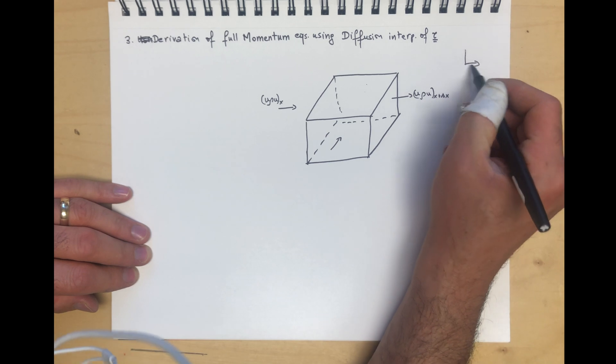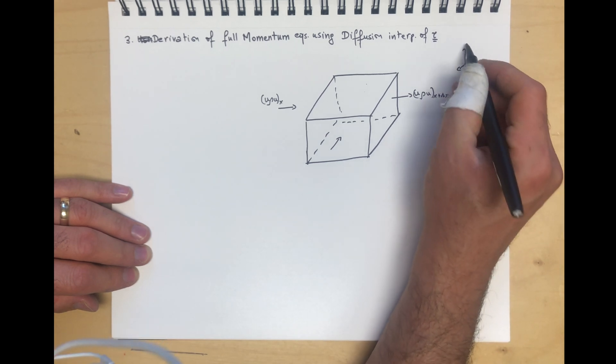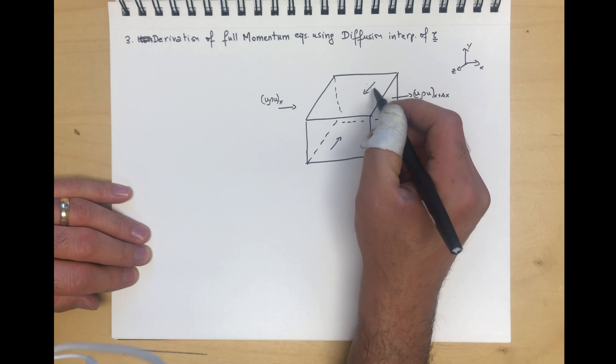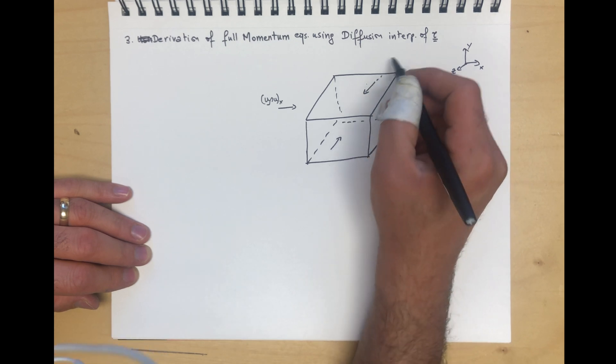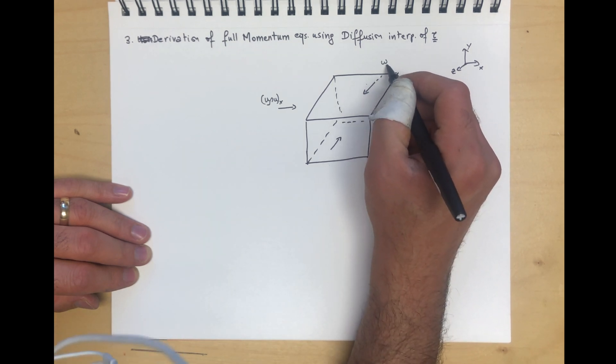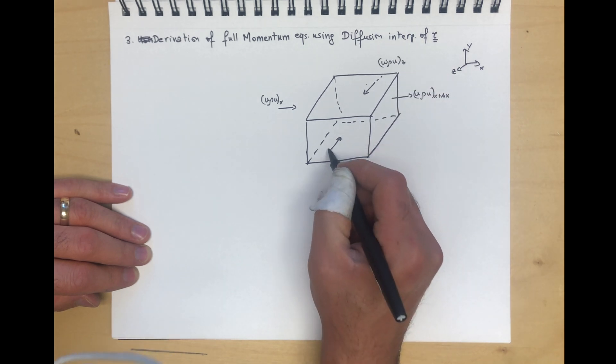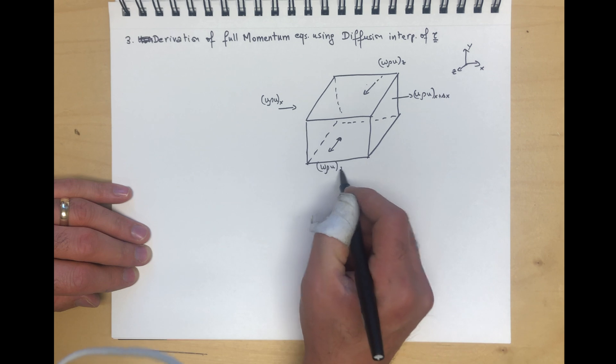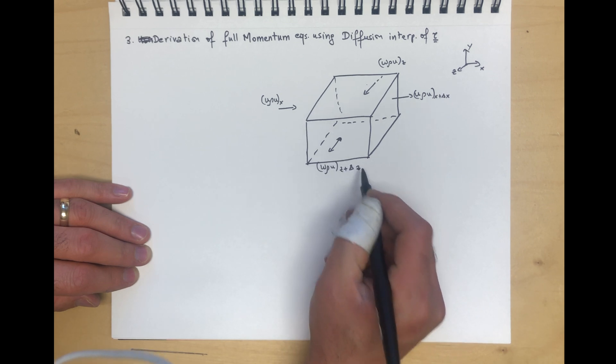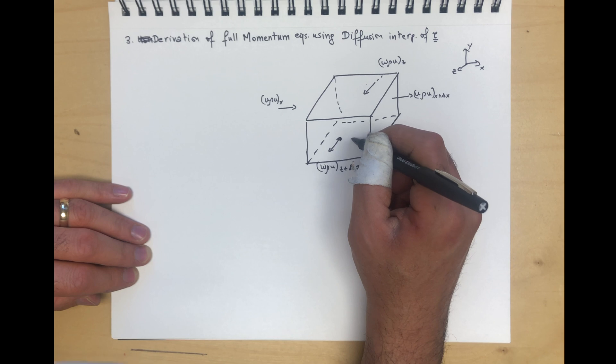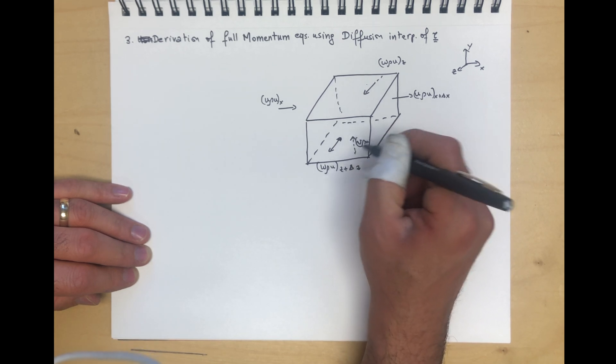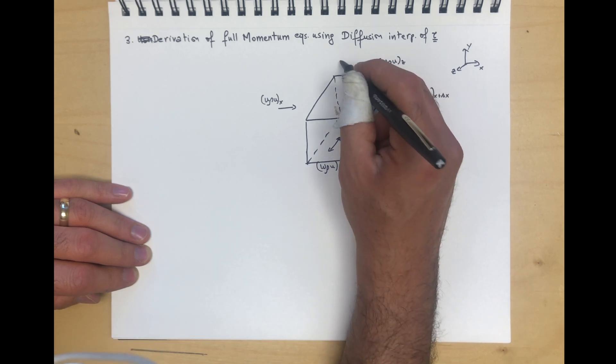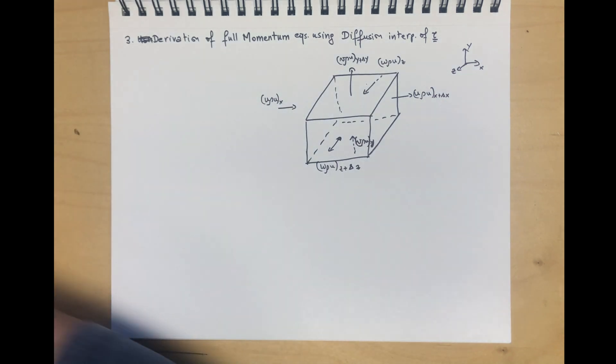Taking x, y, and z axes: coming in from over there, we have w ρ u at z and w ρ u at z plus Δz. In the y direction, we have v ρ u at y coming in and v ρ u at y plus Δy coming out.